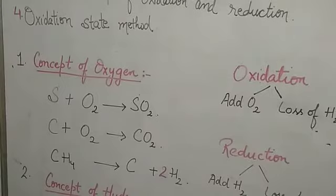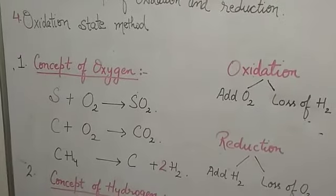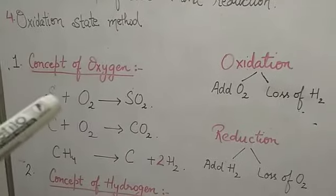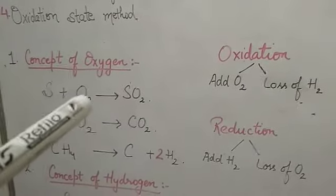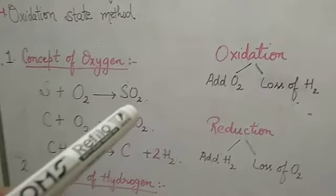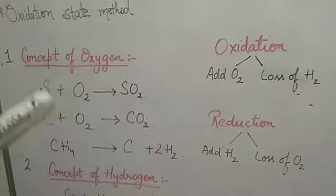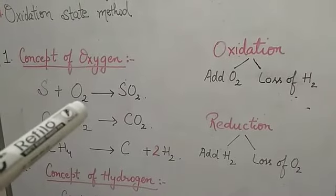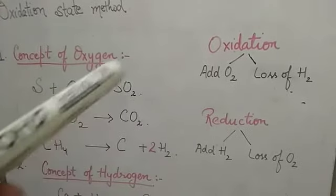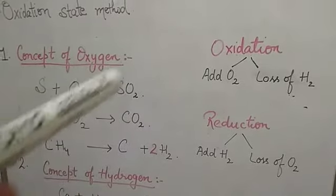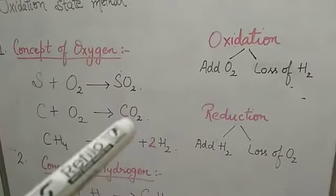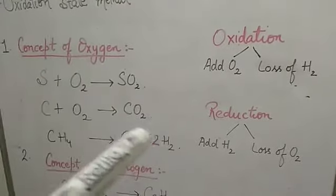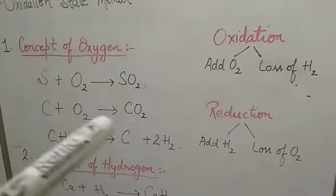Let us start with the first concept — the concept of oxygen. What happens when an element gains oxygen? Here you can see sulphur: after gaining oxygen it becomes oxidized — it becomes sulphur dioxide. Similarly, carbon: when there is addition of oxygen, carbon becomes oxidized and it becomes carbon dioxide.